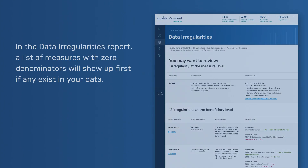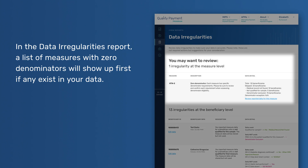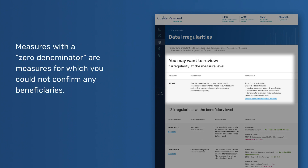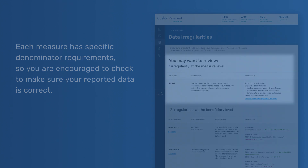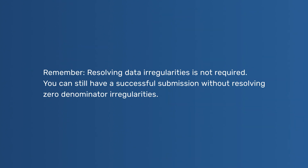Irregularities at the measure level. In the Data Irregularities report, a list of measures with zero denominators will show up first if any exist in your data. Measures with a zero denominator are measures for which you could not confirm any beneficiaries. Each measure has specific denominator requirements, so you are encouraged to check to make sure your reported data is correct. Remember, resolving data irregularities is not required — you can still have a successful submission without resolving zero denominator irregularities.